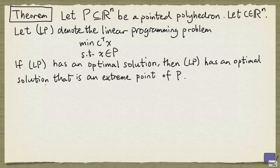You might have observed that when you solve a linear programming problem, you often end up with an optimal solution that is an extreme point of the feasible region. The result that we are going to look at next specifies when exactly that can happen.